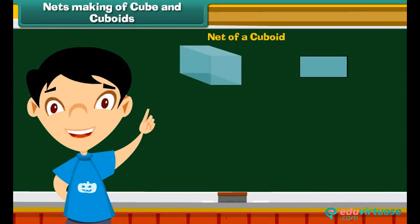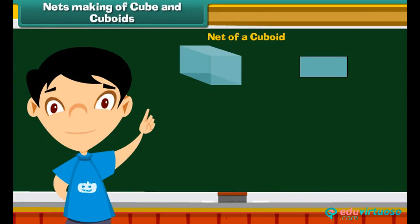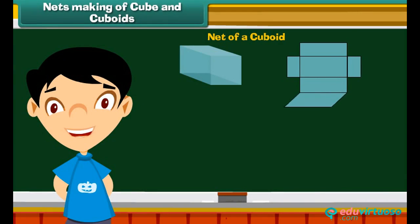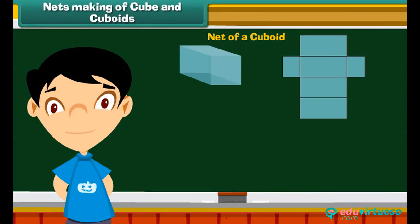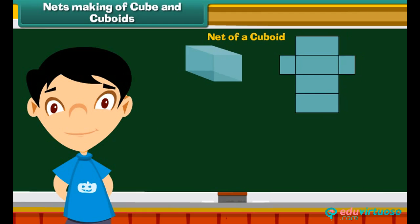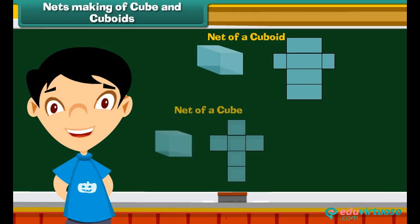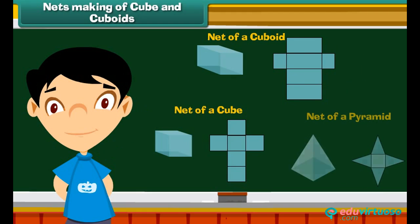Nets — making of cube and cuboids: A net of a 3D shape is an arrangement which, when folded along the common edges, forms the 3D object. Here are some nets.